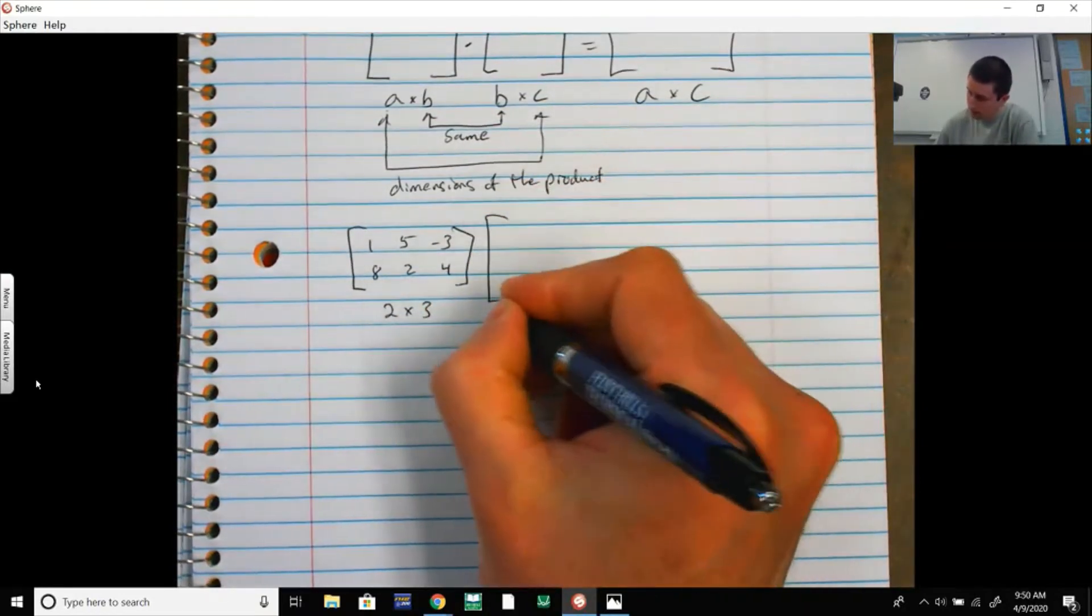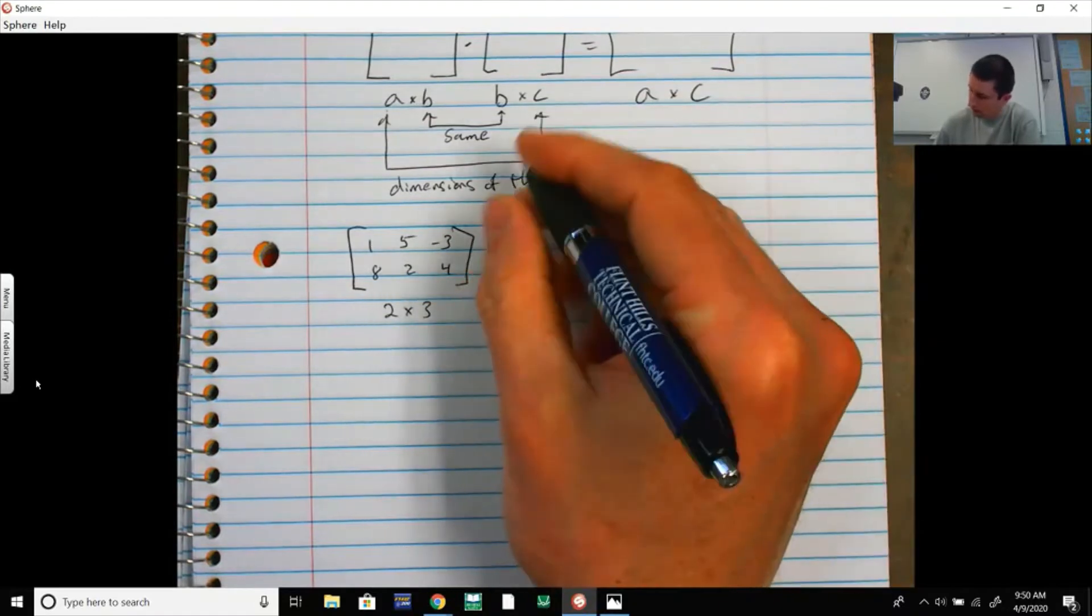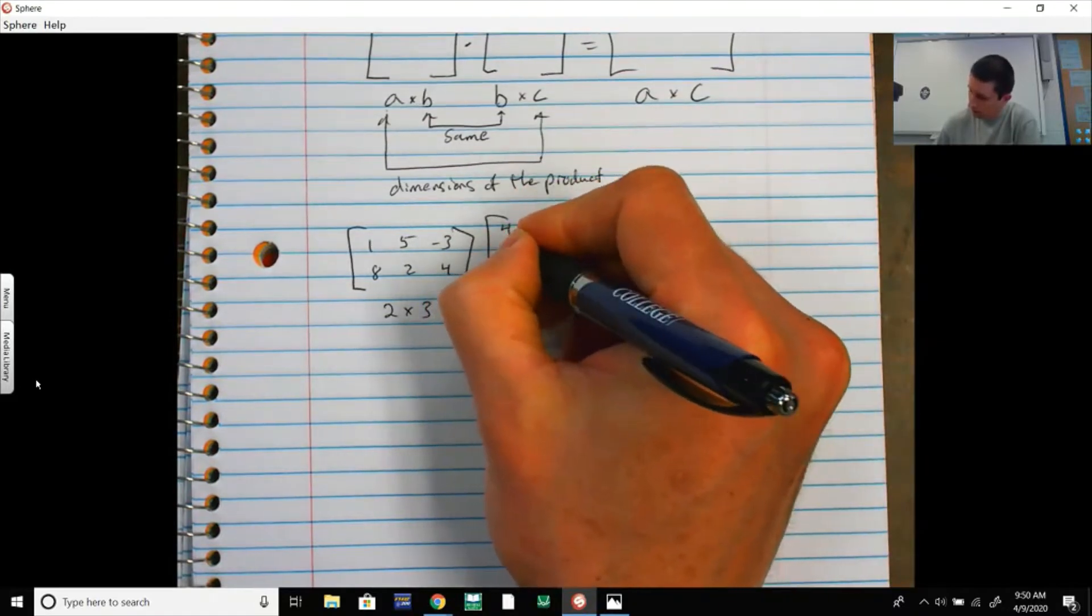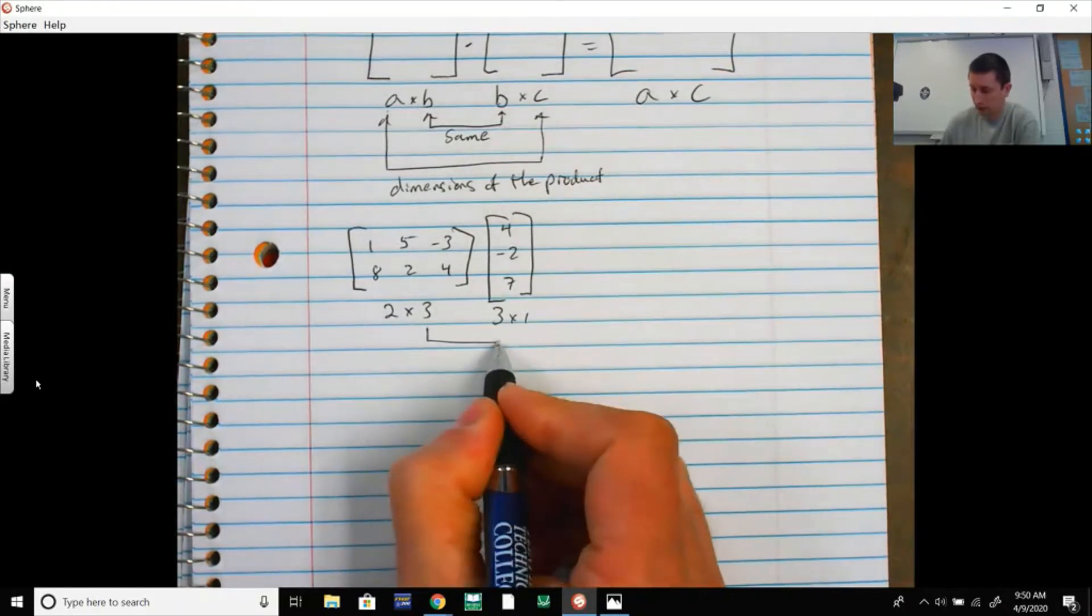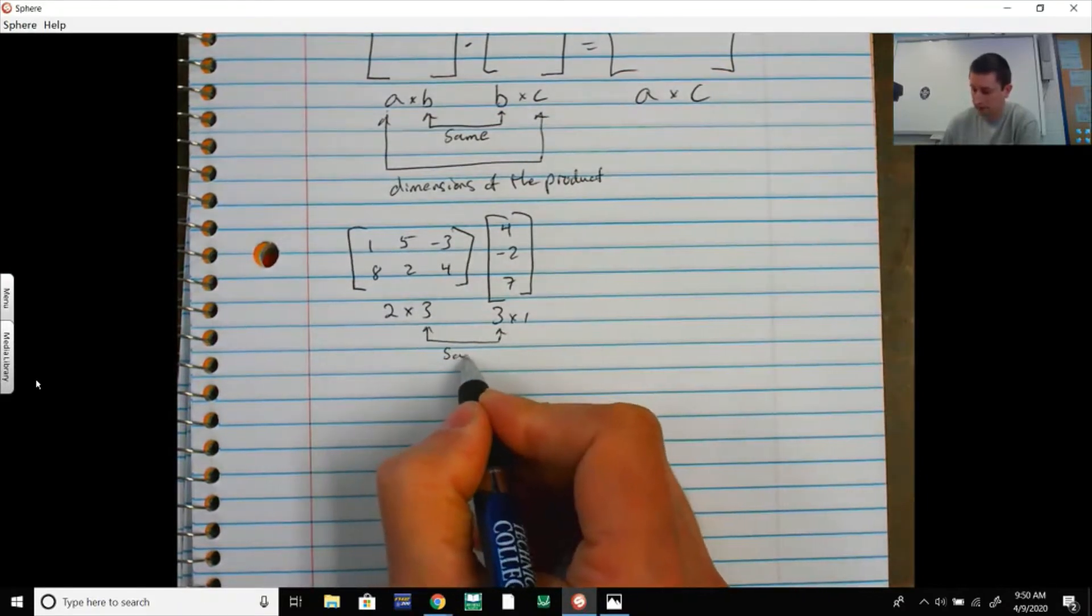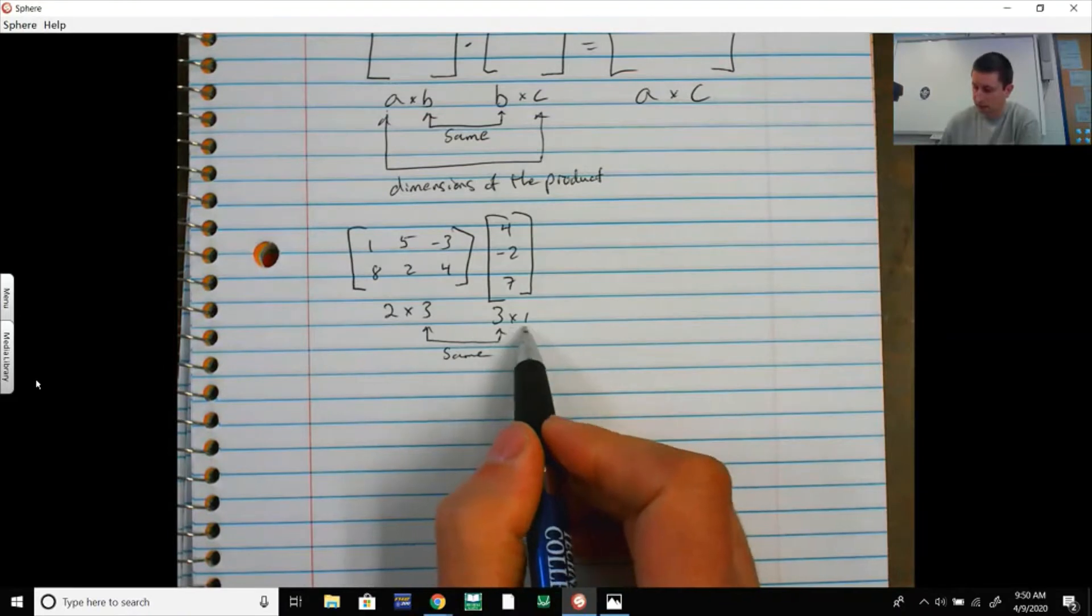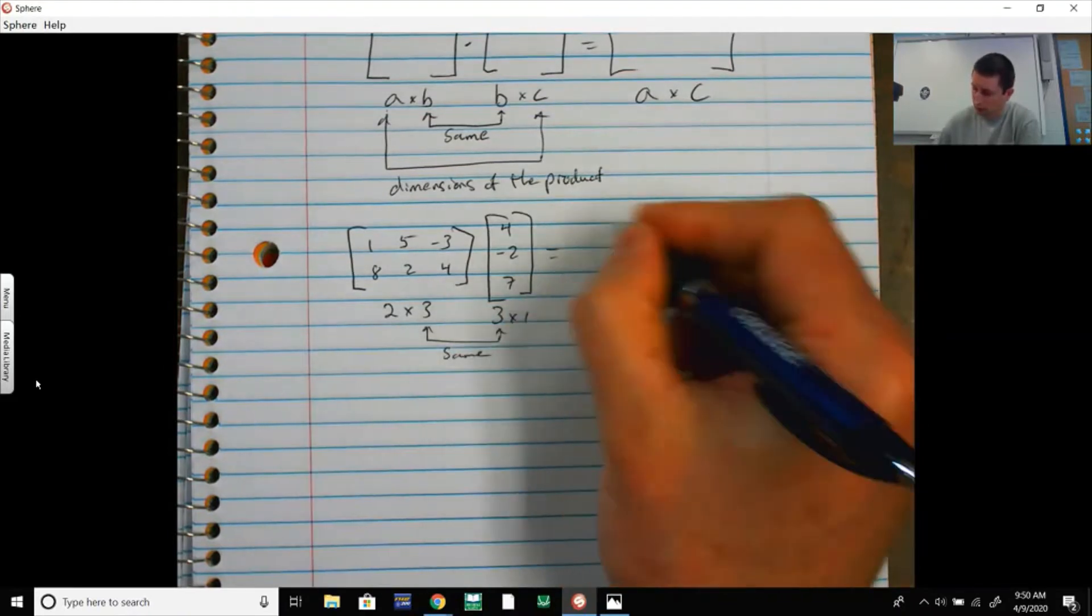That means I need to multiply it by a 3 by 1 matrix. This is 4, -2, and 7. I can do this because these two are the same number. They have to be the same. Now my answer is going to be a 2 by 1 matrix.